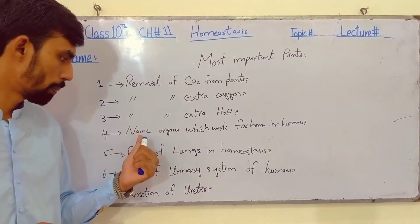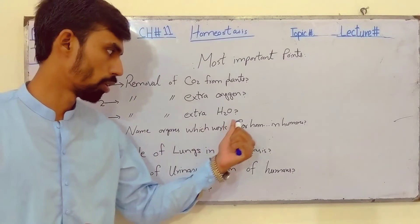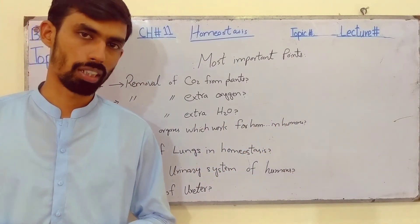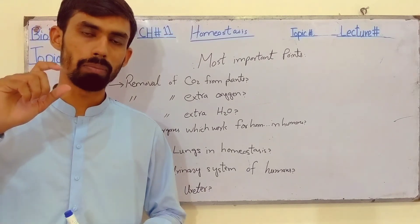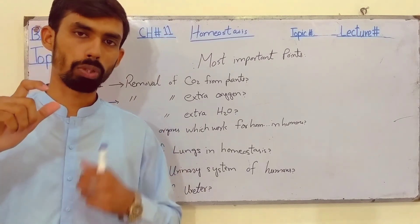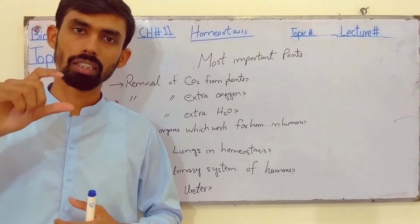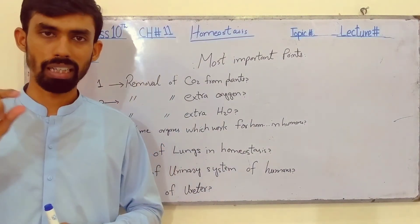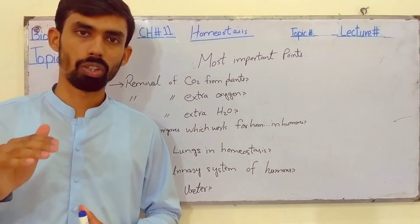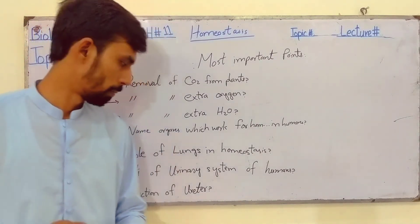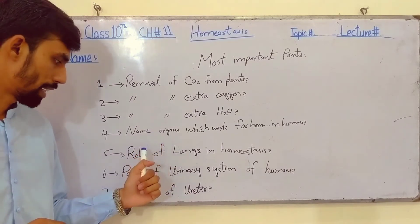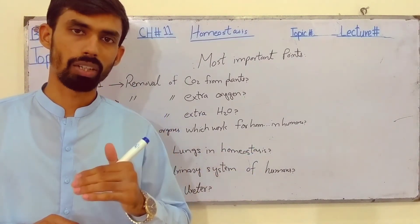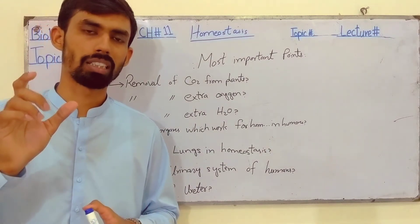The fourth question: name the organs which work for homeostasis in humans. When we start the topic of homeostasis in humans, all the relevant organs will be shown. The fifth question is: the role of lungs in homeostasis.